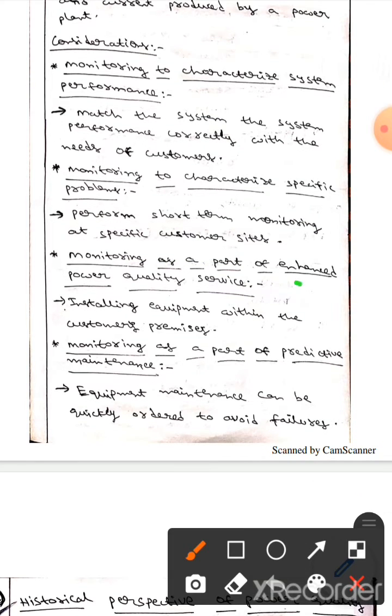The next one is monitoring as a part of enhanced power quality service. This means installing equipment within the customer's premises. Premises means customer's place or site or property.